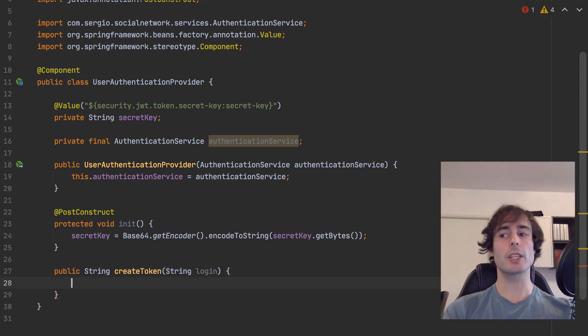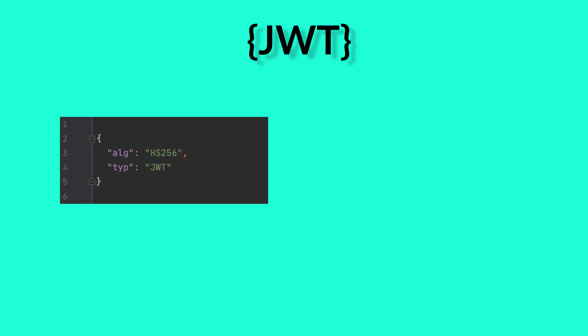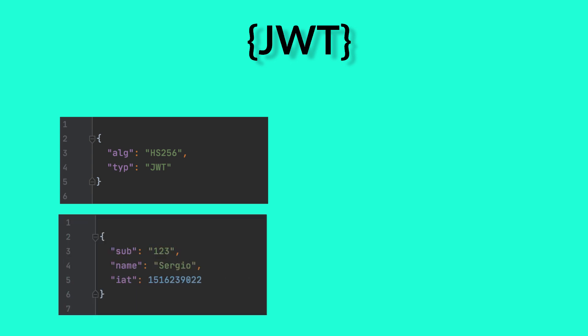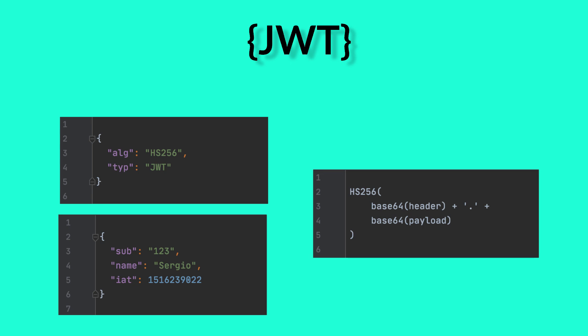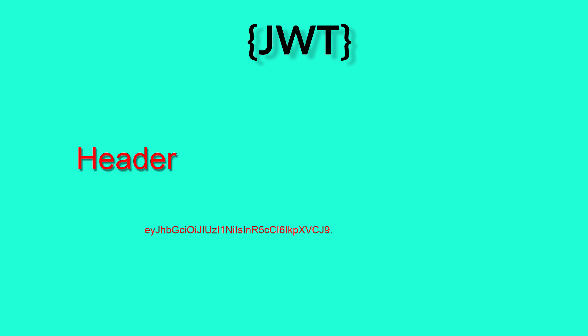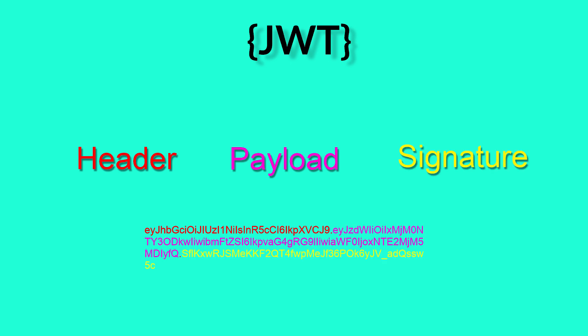Let's now create the JWT token. The JWT is divided in three parts: the header, which contains the information about the algorithm used to cipher the token and what kind of token it is. Then comes the payload with the claims — the claims are some standard information you can find in the token, such as the username, the expiration time, the creation date, and more. And I can have some custom claims. The last part is the signature: for the signature I use the header content encoded in base64, then use the payload content also encoded in base64, and encrypt the concatenation of both using the algorithm specified in the header. The resulting token will be the header encoded in base64, followed by a dot, the payload encoded in base64, followed by a dot, and the signature.